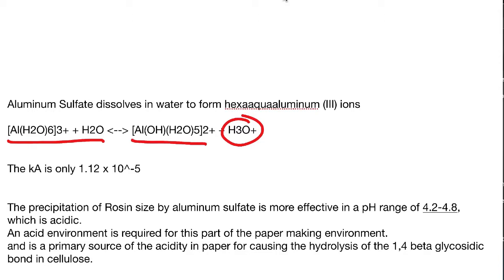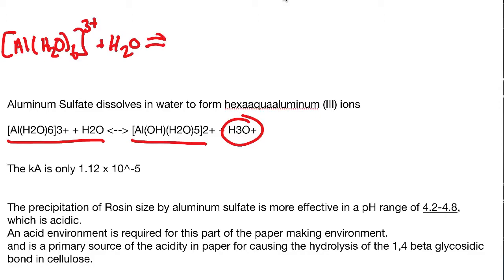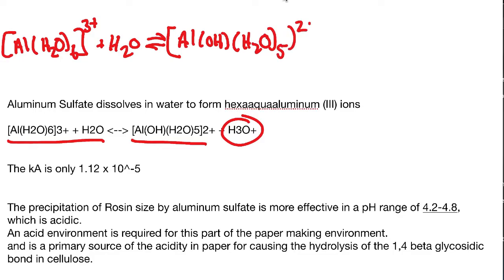If you want to see this as a chemical reaction, it looks like aluminum forming a hexaaqua complex, plus even more water, and it's in equilibrium to form another complex. This is the important part because this product is acid — that's what we're concerned about.